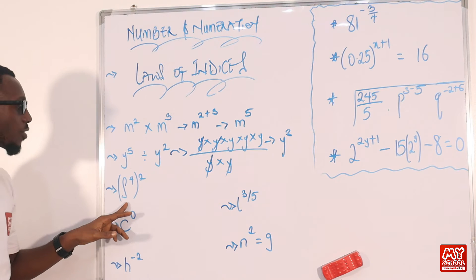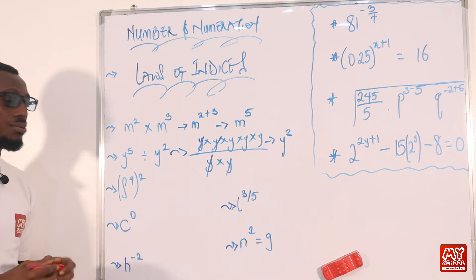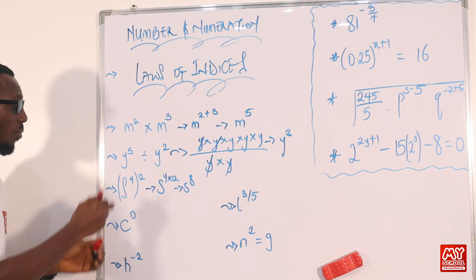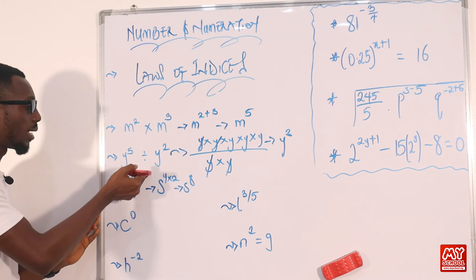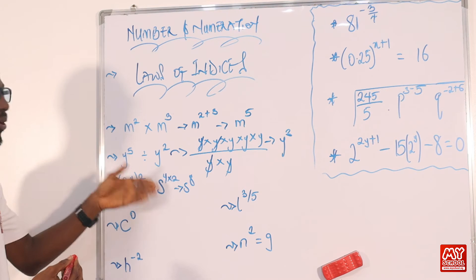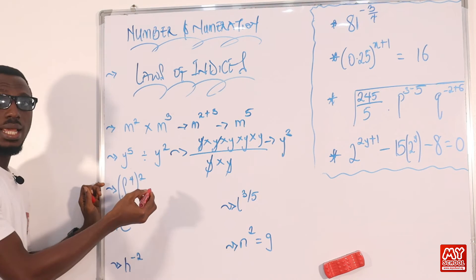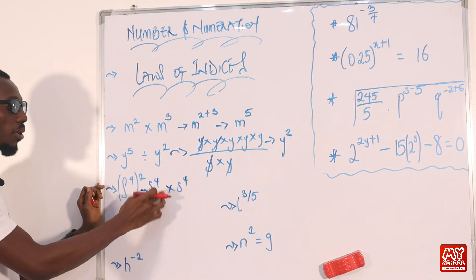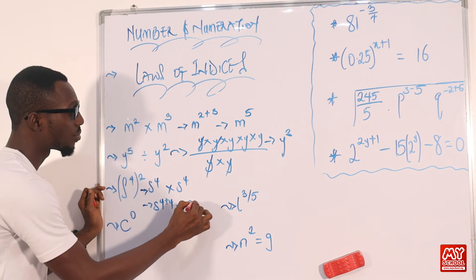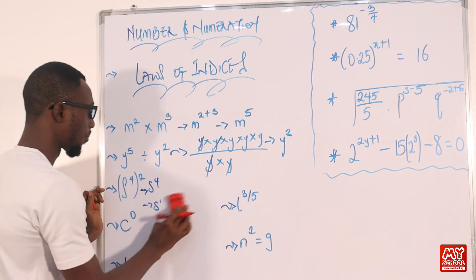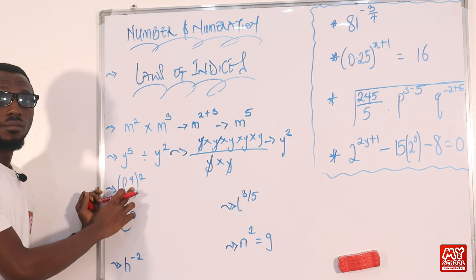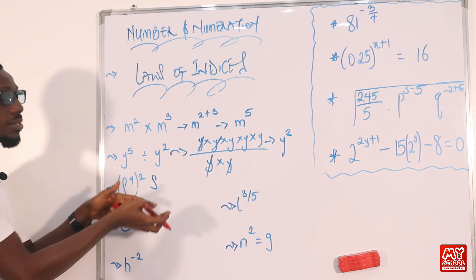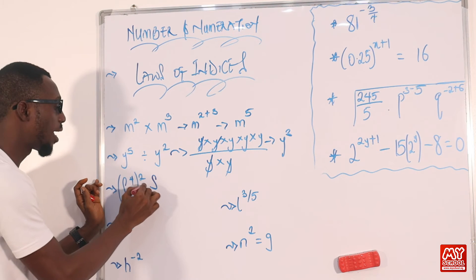Let's go on to the third law. We have S raised to power 4, close brackets, everything raised to power 2. This is simply S raised to power 4 times 2, and that gives you S raised to power 8. You just multiply the power inside by the power outside the bracket. It's another way of saying S raised to power 4 times S raised to power 4 — remember that times we change to plus — so that will be S raised to power 4 plus 4, which gives us S raised to power 8. So 4 times 2 basically gives you S raised to power 8.